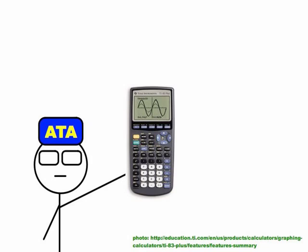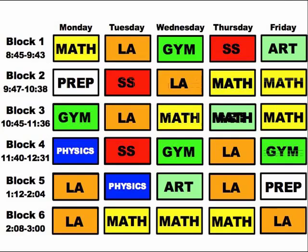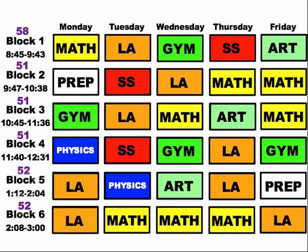Grab your ATA hat, grab your calculator, let's get going. Don't worry, it's easy. Step one: grab your timetable and figure out how many minutes you work per block. This is your instructional time.